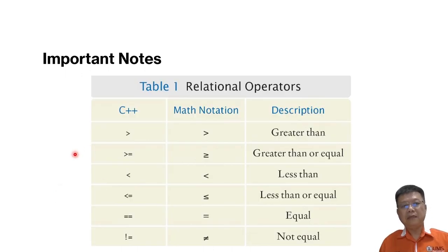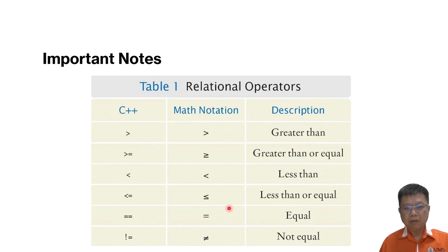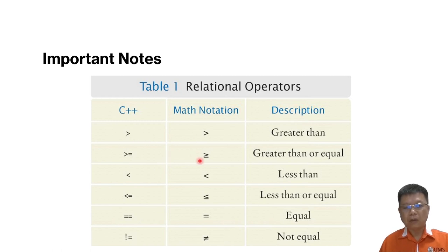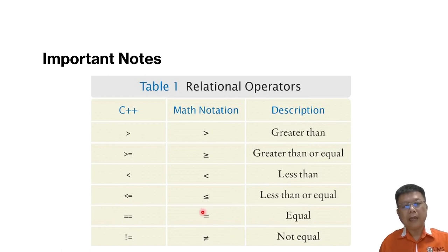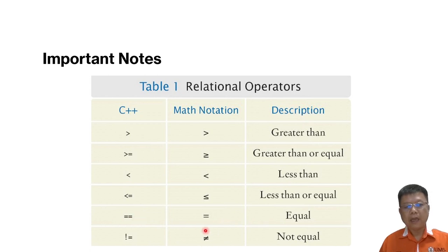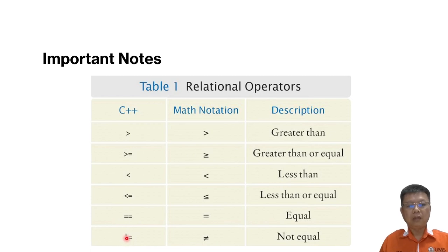When we do comparisons, we always use relational operators. In mathematics we use certain symbols, but in C++, for 'greater than' nothing changes — we use this symbol. For 'greater than or equal to', we use this symbol. For 'less than' and 'less than or equal to', we use these symbols. If we want to compare whether A equals B, we use double equals. And if we want to compare whether A is not equal to B, then we use the not-equal symbol.